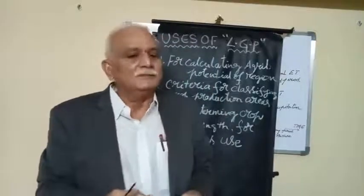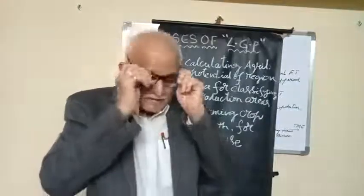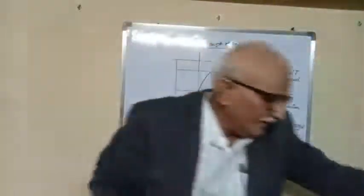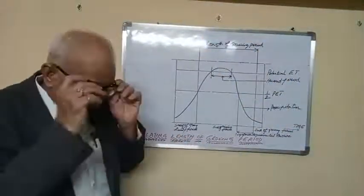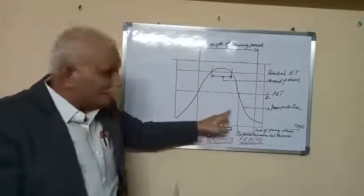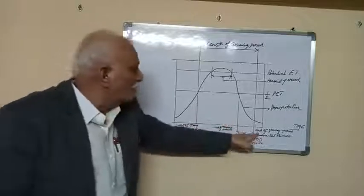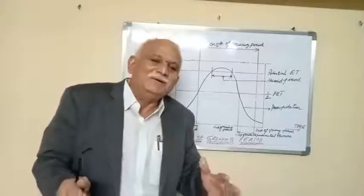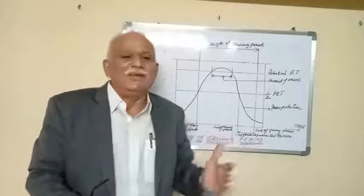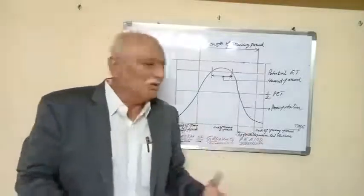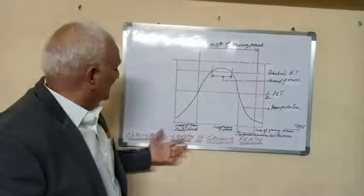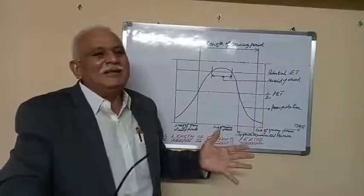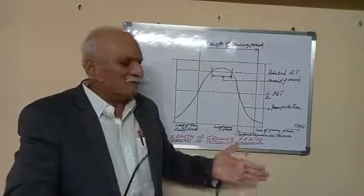By calculating the length of the growing period using precipitation, temperature, and soil moisture data, we can determine the crop sowing window — the optimal date of sowing. This allows us to estimate which crop can be grown in which area and how much of the growing period is available for any particular crop.